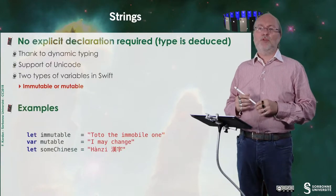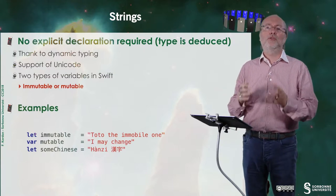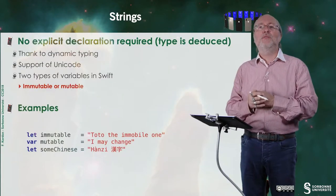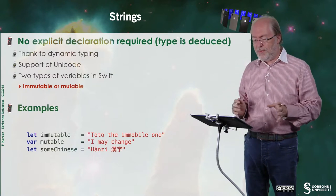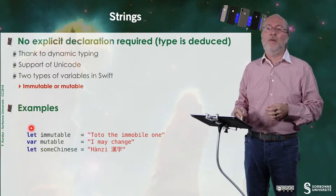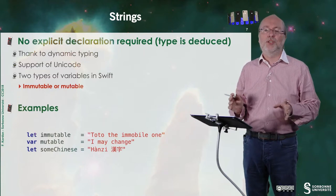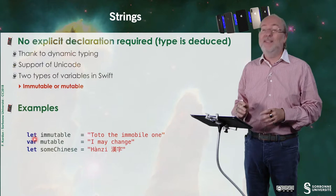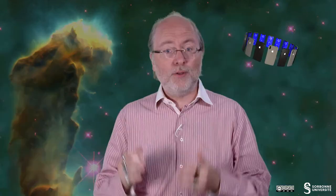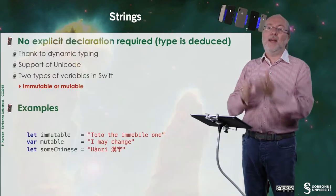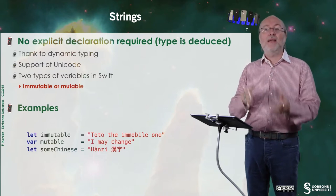There are no explicit declarations about strings — the type can be deduced thanks to dynamic typing. Strings support Unicode, as is also true for any string in Objective-C. In Swift you have two types of variables: immutable and mutable. If you declare a variable with let, it's a constant and its value will never change. If you say var, it's a variable and the value may change. Strings declared with let are like NSStrings, and strings declared with var are like NSMutableStrings.